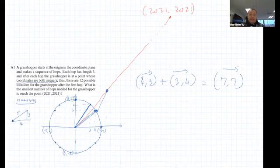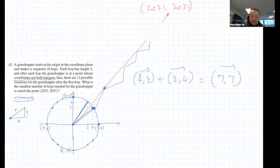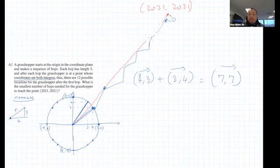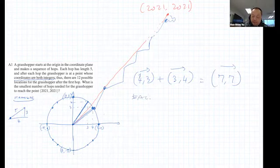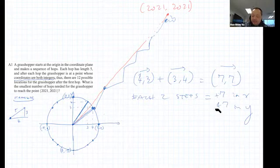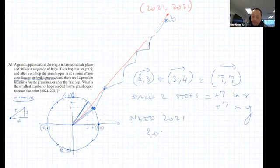The good feeling is you should repeat this — keep doing (4, 3) then (3, 4), zigzagging along until you're close to (2021, 2021), and hopefully do some final adjustment to land there. It's almost like the greedy algorithm in graph theory where you go the furthest you can at each step and hope that's optimal. But we know from graph theory that the greedy algorithm is sometimes not the most efficient. So this may or may not be the best way. Each two steps gives +7 in X and +7 in Y, and we need 2021.